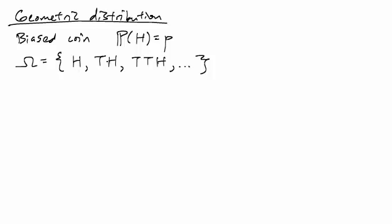And so now we're going to assign probabilities to each of these outcomes. What's the probability of heads in one toss? Well, this is just P.